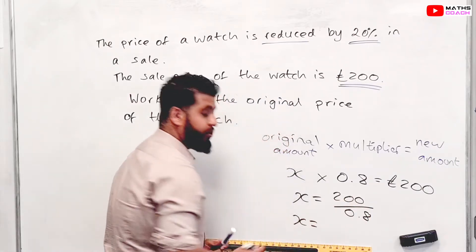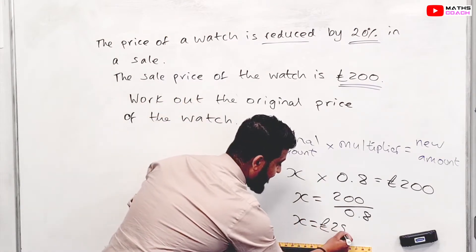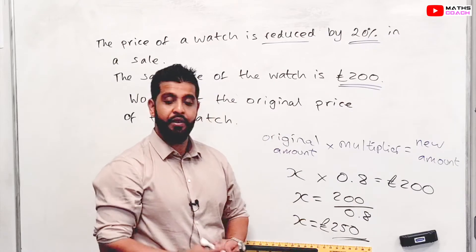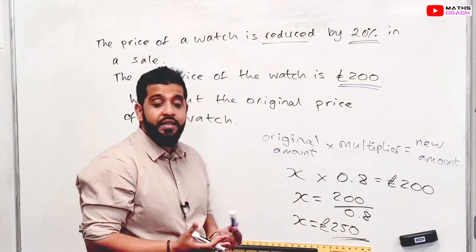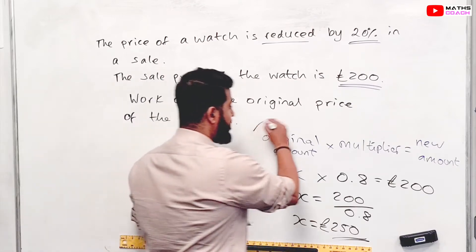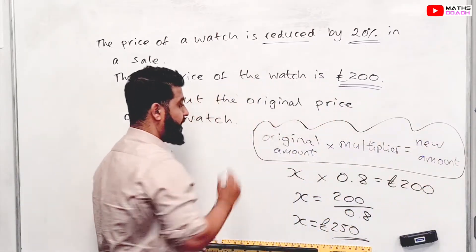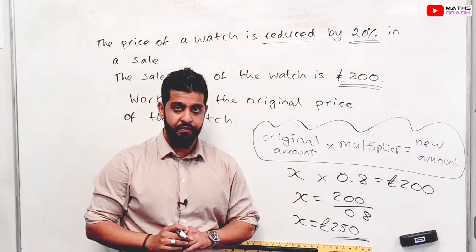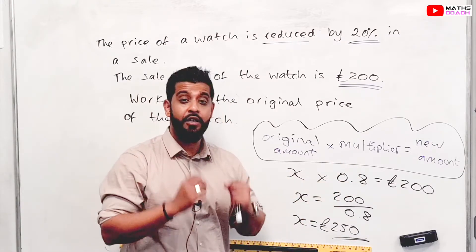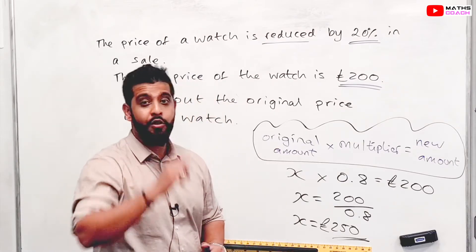Our answer is given by £200 divided by 0.8. If you get your calculator and do that, you should get £250. And that's how we work out the reverse percentage — very simple, very easy if you write down and use this formula. If you're unsure about how I worked out the multiplier of 0.8, I do have a video on the channel about multipliers, so go and watch that.